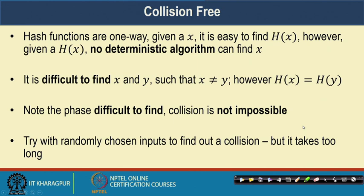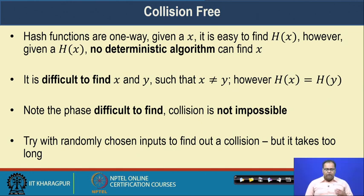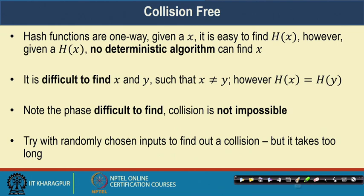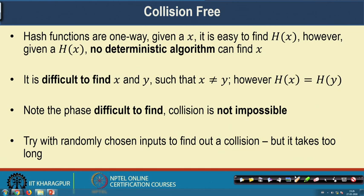Let us look at these three properties in a little more detail. The collision-free property says that given some value x, it is computationally easy to find H(x), but given H(x), you cannot find the original message in any computationally efficient way. Additionally, it is difficult to find x and y such that x is not equal to y, yet H(x) equals H(y) — this is called a hash collision.